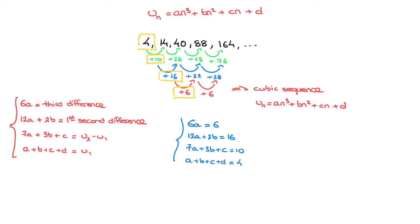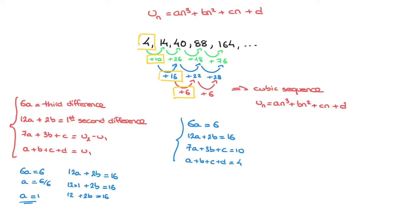We work through these equations from top to bottom. The first equation, 6a equals 6, tells us that a equals 6 over 6, so a equals 1. Now that we have a, we move on to the second equation: 12a plus 2b equals 16. Since a equals 1, that becomes 12 plus 2b equals 16, so 2b equals 4, and therefore b equals 2.